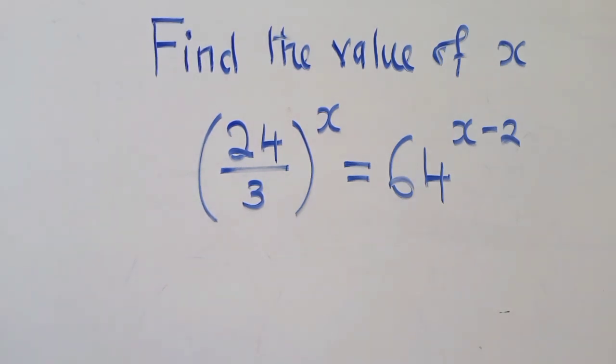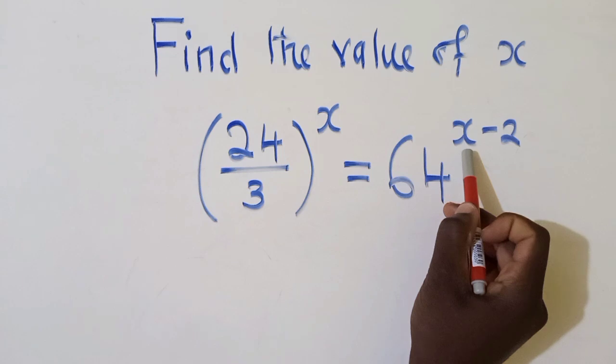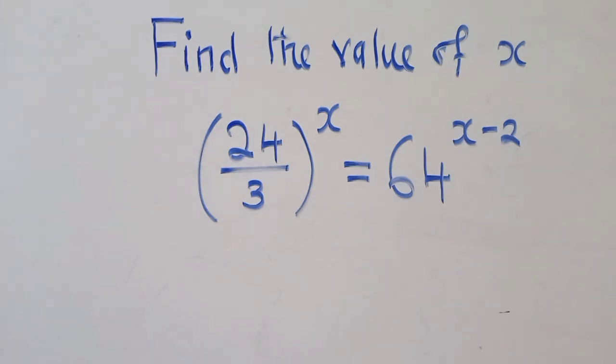This is an exponential equation. How do we find the value of x? x is right here and it's over here. How do we get that value of x?